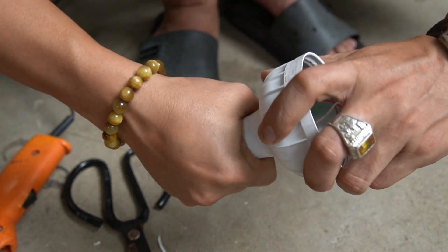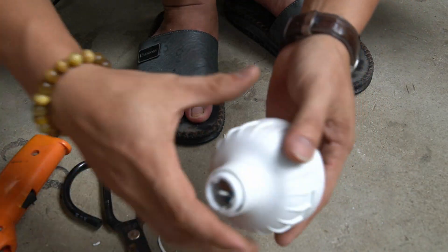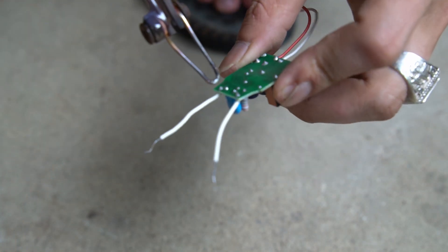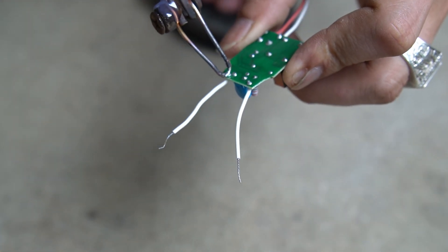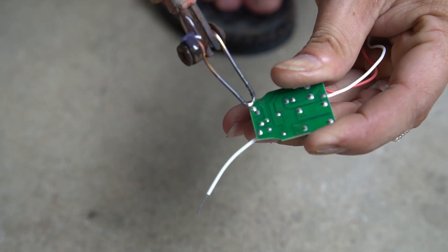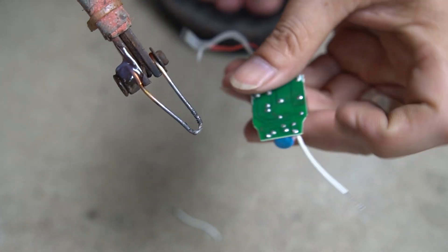Next I will use a pen to mark rectangles on the bulb. Note, draw alternating rectangles. Then I used a saw to cut the created rectangles.